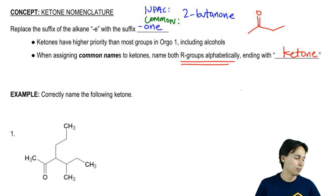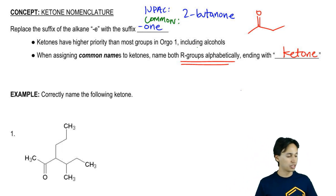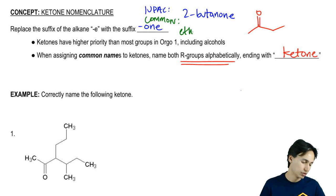For the common name, you would just name the substituents in alphabetical order and end with the word ketone. Then it would be ethylmethylketone.